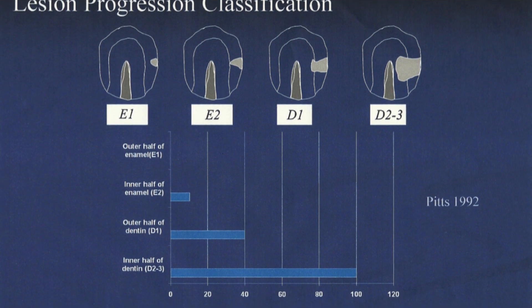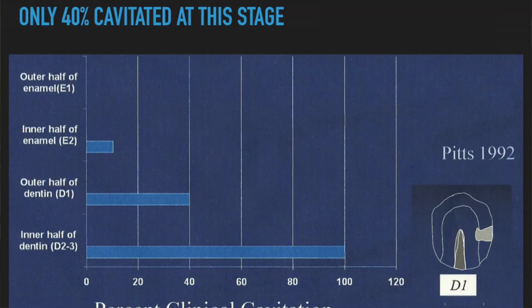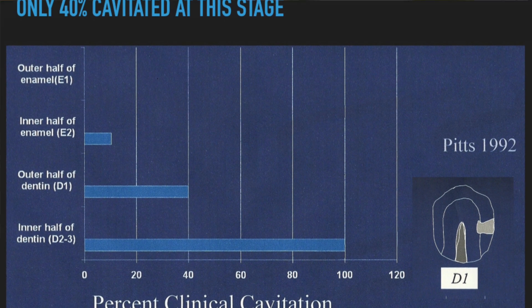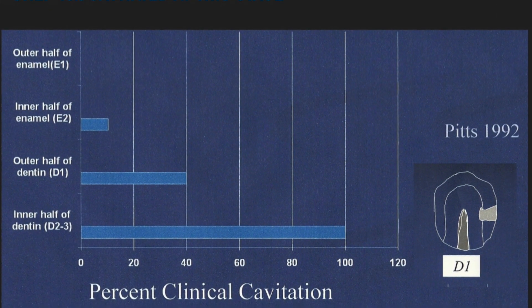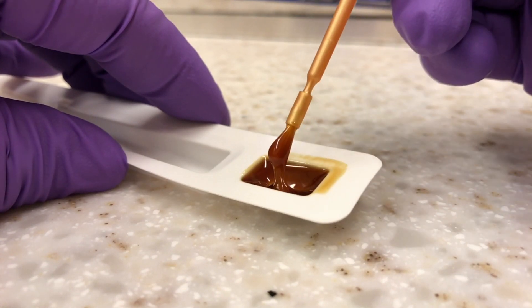What Pitts found was that the typical lesion you see in dental school — the one that goes to the DEJ, even ones that go slightly past it into the dentin — were only cavitated 40% of the time. So there's a 60% chance there's no cavitation at the surface at all. Consider watching some of these lesions rather than jumping straight into treatment. If you do watch a lesion, still treat it with fluoride varnish or silver diamine fluoride to help remineralize and arrest the lesion.